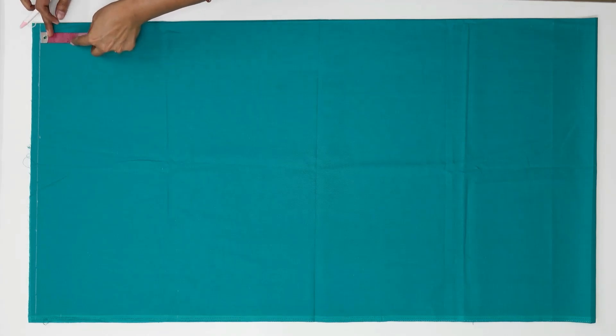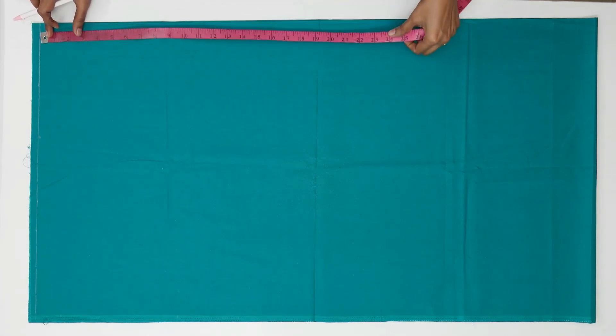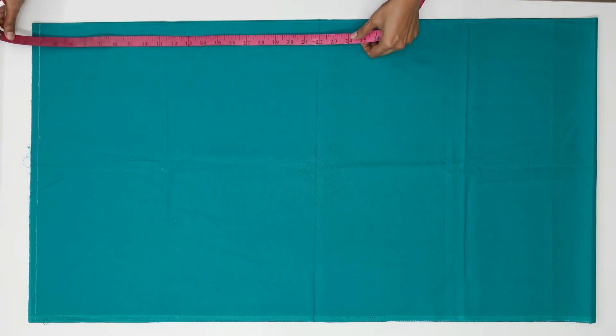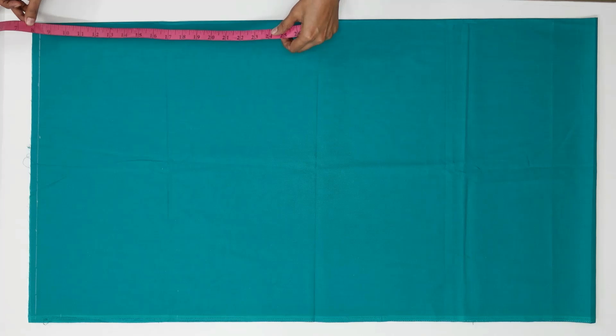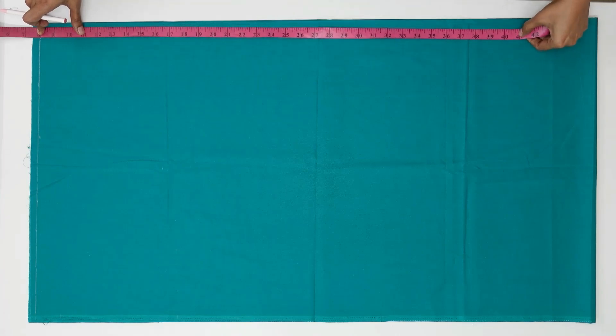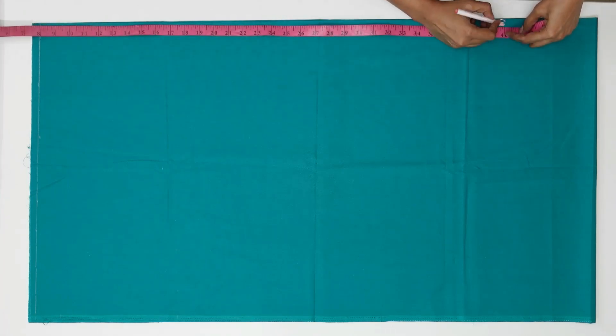Now from here mark the length of the pant, leaving the waistband length. We are going to attach the waistband here. That's why we left half an inch here. So my waistband length is 8 inch. So leaving that 8 inch, the length of the pant is 40 here. So I am marking 40.